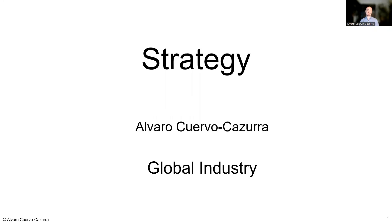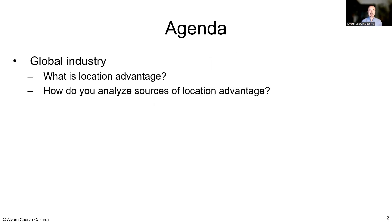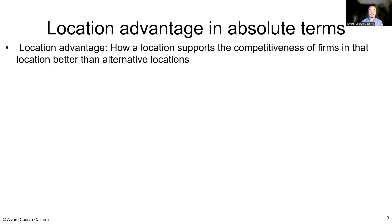Welcome back to the strategy course. Today's topic is global industry, which complements our discussions on local industries. We'll go beyond the local context to understand location advantage and the ways to analyze it. A location advantage is when a location supports a company better than alternative locations — similar to competitive advantage, but relative across places rather than across companies.